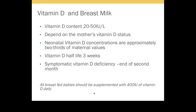The vitamin D content of breast milk is 20 to 50 international units per litre, and depends on the mother's vitamin D status. Neonatal vitamin D concentrations are approximately two-thirds of maternal values, and vitamin D's half-life is about 3 weeks. Because of this, symptomatic vitamin D deficiency may develop by the end of the second month of life. Therefore, it is recommended that all breastfed babies be supplemented with at least 400 international units of vitamin D daily to prevent deficiency.